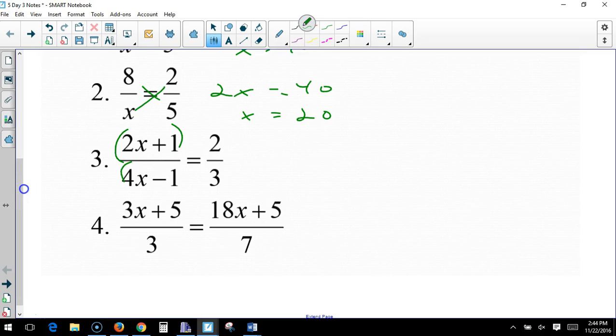Very important parentheses here when we distribute. So, we have, and because of room, I'm just going to go ahead and distribute now. 2 times 4x is 8x, and 2 times negative 1 is negative 2. 3 times 2x is 6x, and 3 times 1 is 3. Subtract 6x, add 2, and you get an answer of 5 halves.